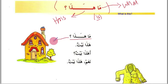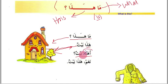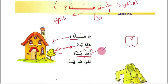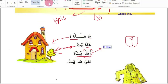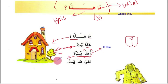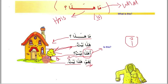'Ma hadha? Hadha baytun' — what is this? This is a house. Now there is a new word: 'ahadha'. It starts with a hamza with a fatha, and it means 'is this'. The hamza at the beginning is for asking a question. 'Ahadha baytun?' means 'is this a house?' 'Na'am, hadha baytun' — yes, this is a house.